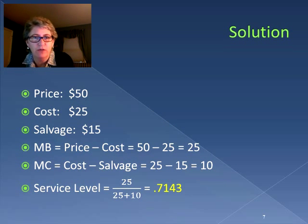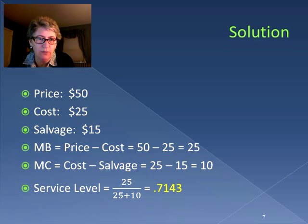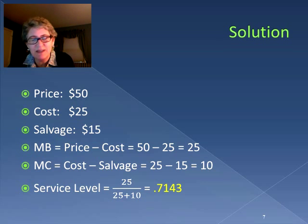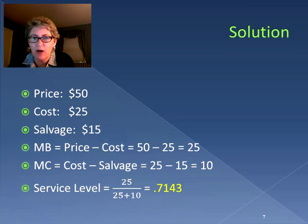We can sell a figurine for $50 — that's the price. It costs $25 to acquire it, and at the end of the season the best we can get for each figurine is $15 — that's our salvage value. So our marginal benefit is price minus cost, which is $25. Our marginal cost is cost less salvage value, which is $10. So our service level is 25 divided by (25 + 10), giving us 25/35 = 0.7143. We're looking at about a 71.43% service level, not 90%.